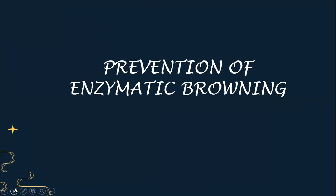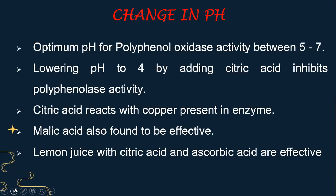Here are the preventive methods for enzymatic browning. First and foremost is the change of pH. The optimum pH for polyphenol oxidase activity is between 5 to 7. Lowering the pH to 4 by adding citric acid inhibits the polyphenolase enzyme activity. Citric acid also reacts with copper present in the enzyme. Malic acid is also found to be very effective. Lemon juice, with citric acid and ascorbic acid, is effective in reducing enzymatic browning.